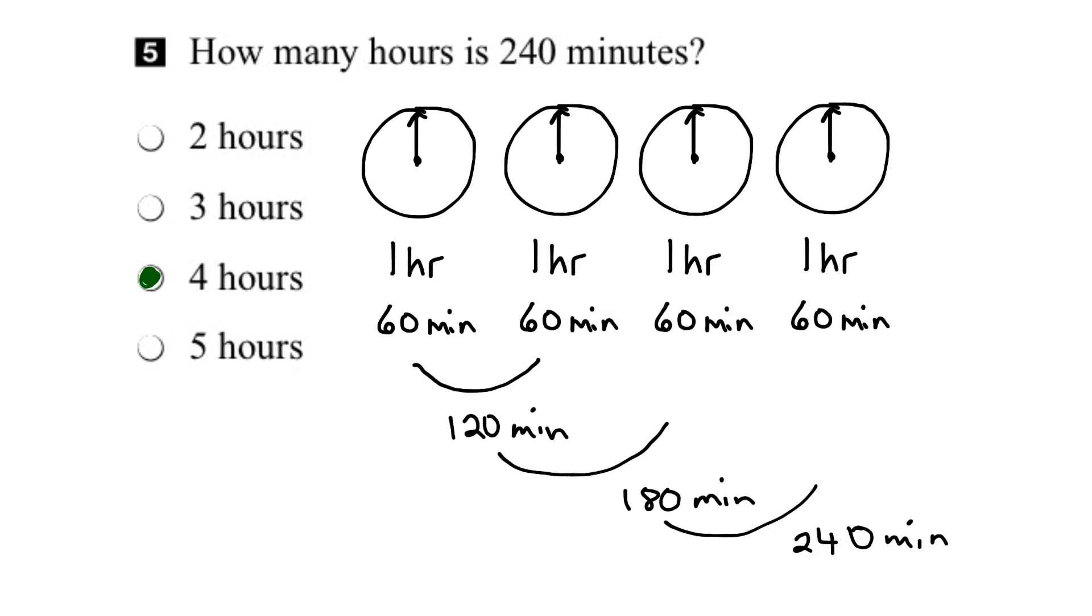And we could use another method to verify the answer. We could say I've got 240 minutes, and I'm dividing that by 60 minutes in every hour.